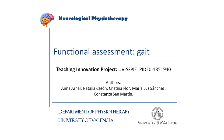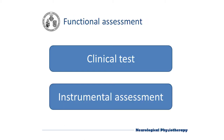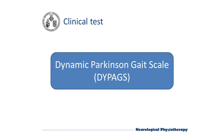In this video we will talk about gait assessment in Parkinson's disease. It can be assessed clinically with scales and tests, or through objective assessment tools. One of the clinical specialized tests in Parkinson's disease is the Dynamic Parkinson's Gait Scale, DPACS.